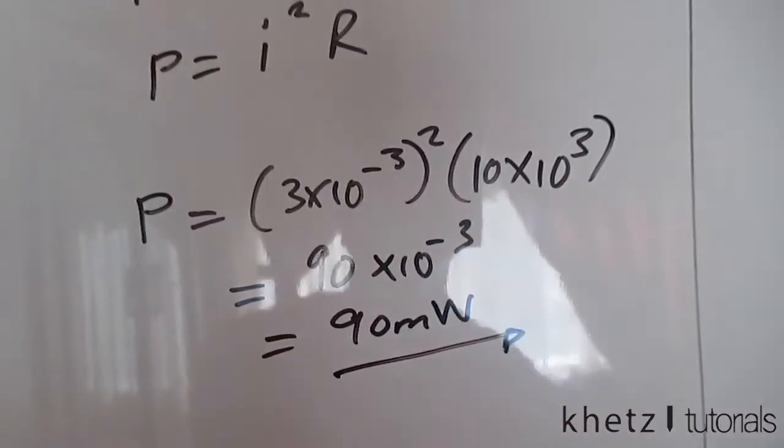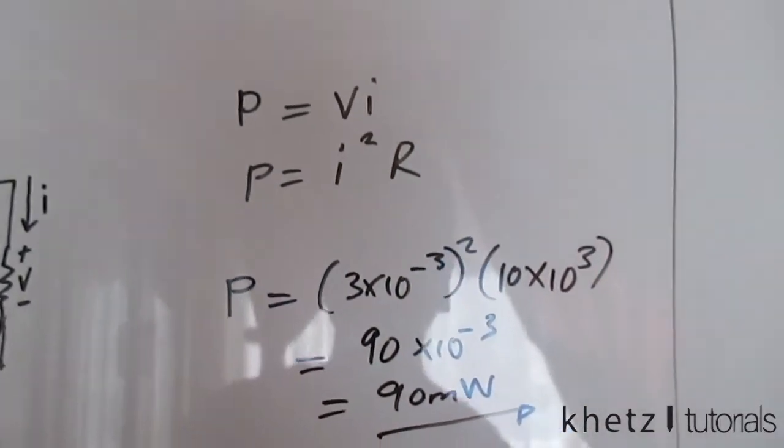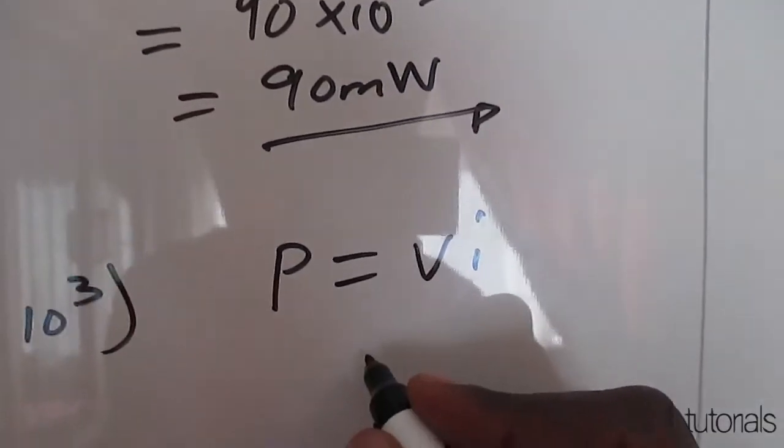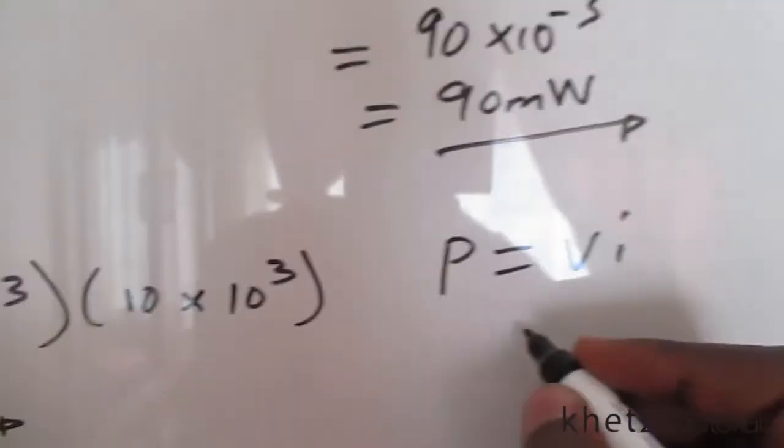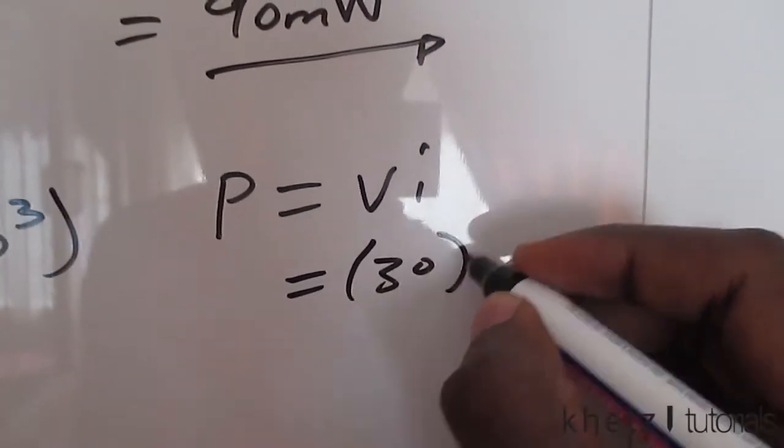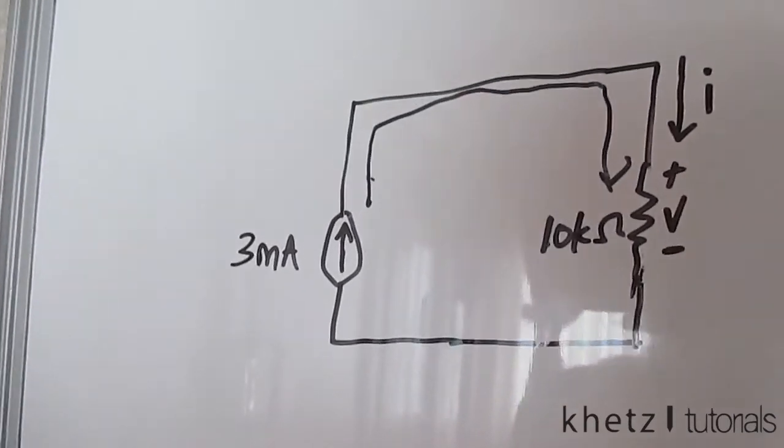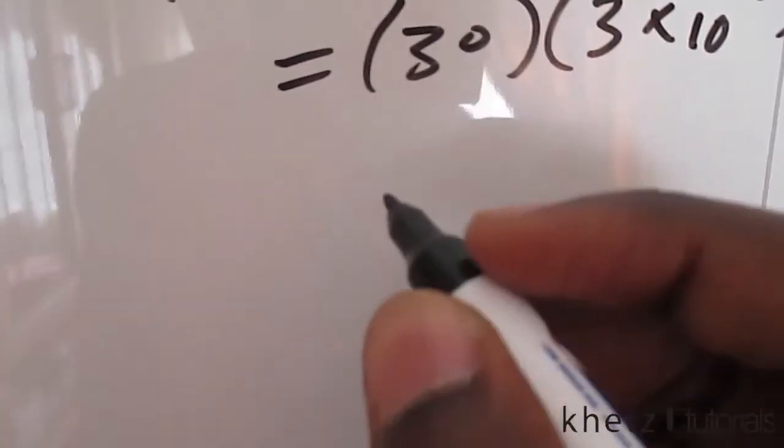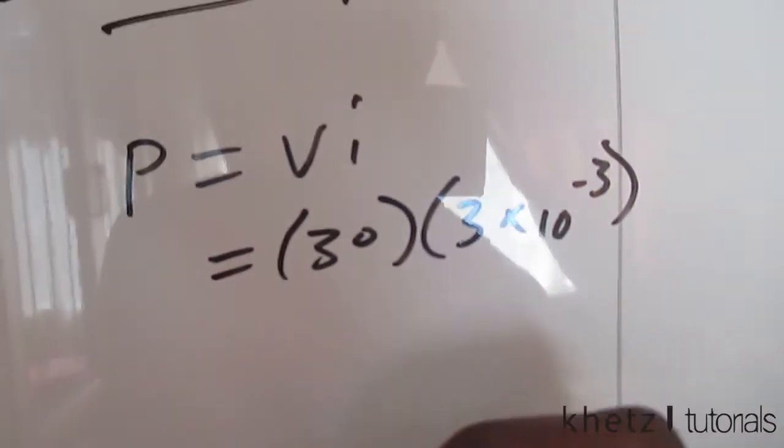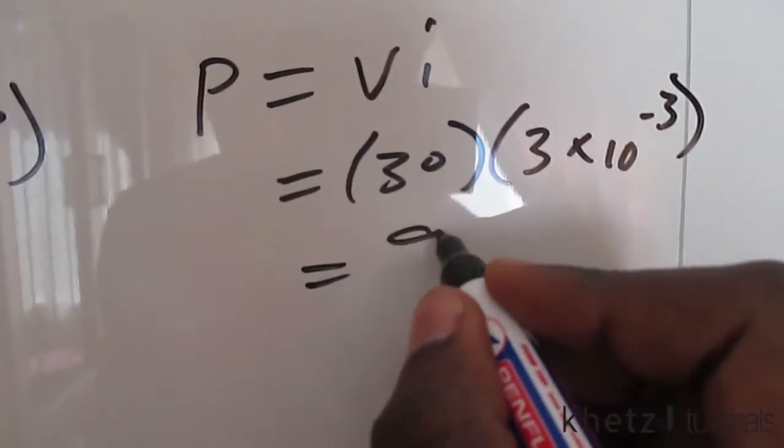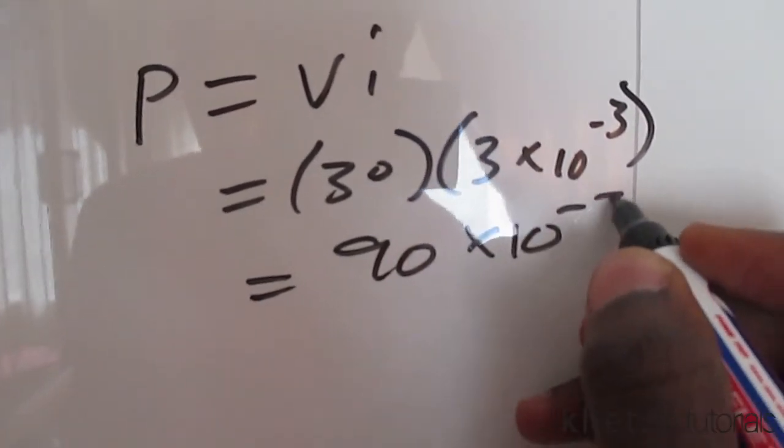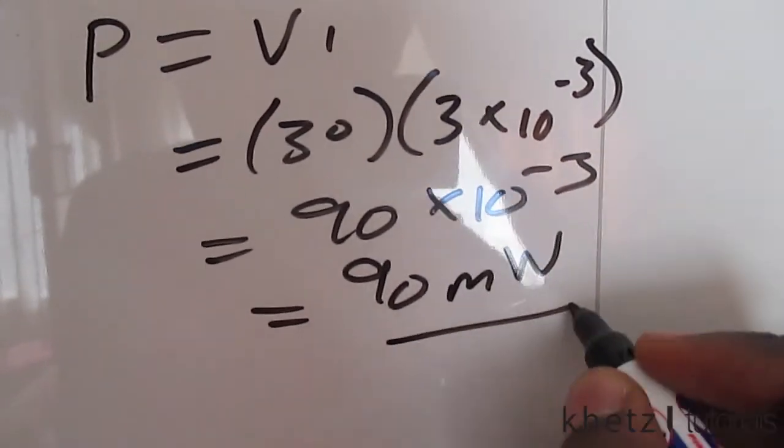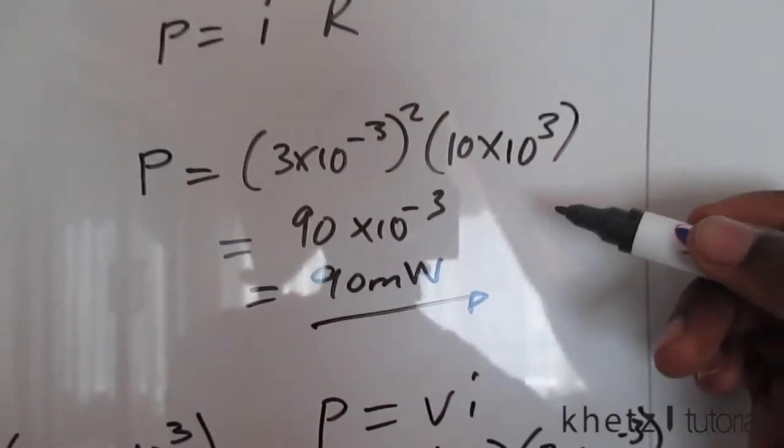Now if you are sure about your answers and using the first formula, you should get the same answer. So P equals VI, and the calculated V was 30, so 30 times the value of the current, which is 3 times 10 to the minus 3. Just say 30 times 3, which is 90 times that, so 90 times 10 to the minus 3, which is 90 milliwatts, which is exactly the same as using the second formula.